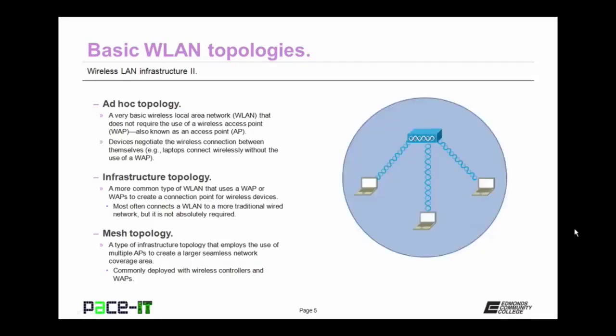Then there's the infrastructure topology. It's a more common type of wireless local area network that uses a WAP or multiple WAPs to create a connection point for wireless devices. Most often it's used to connect a wireless network to a more traditional wired network, but that wired network is not absolutely required.